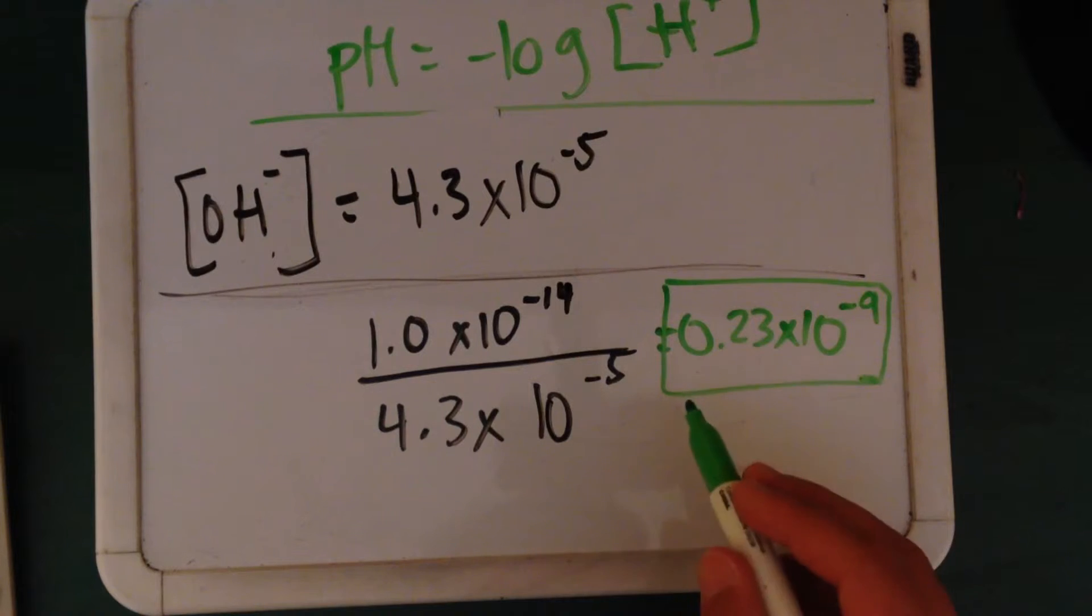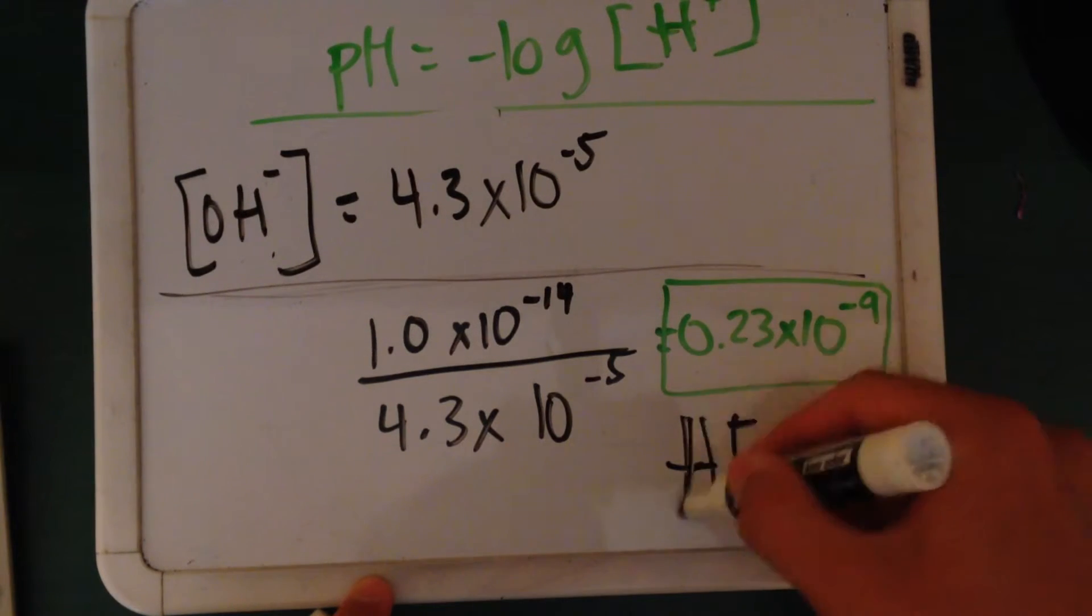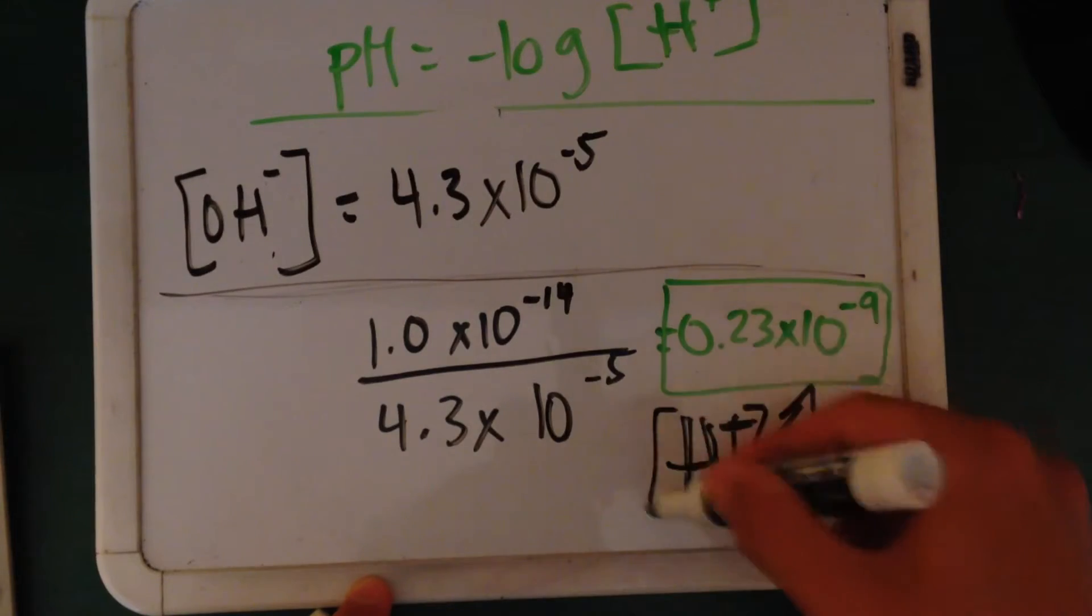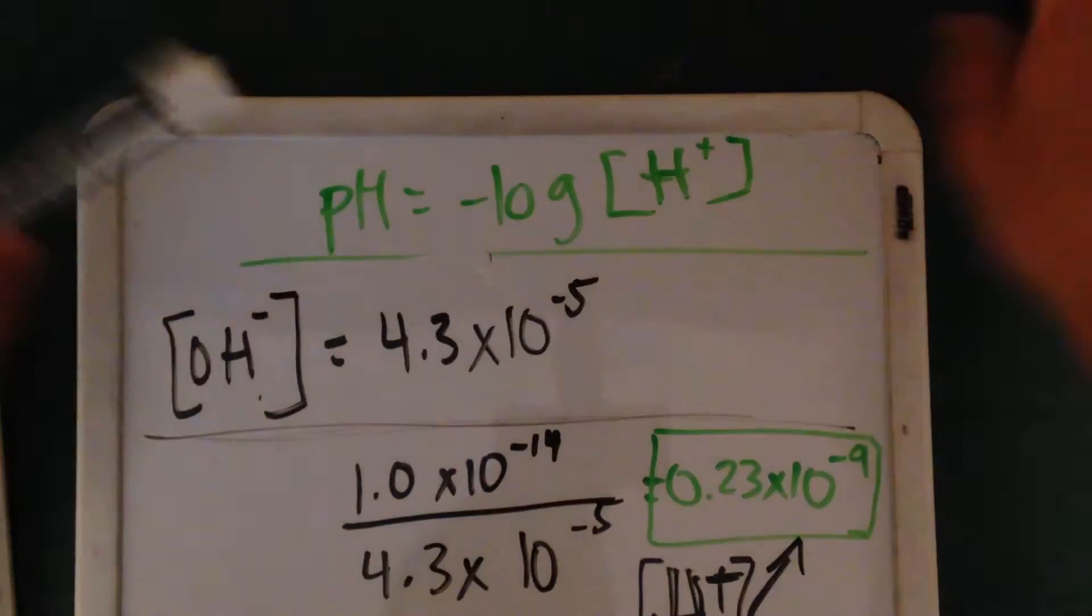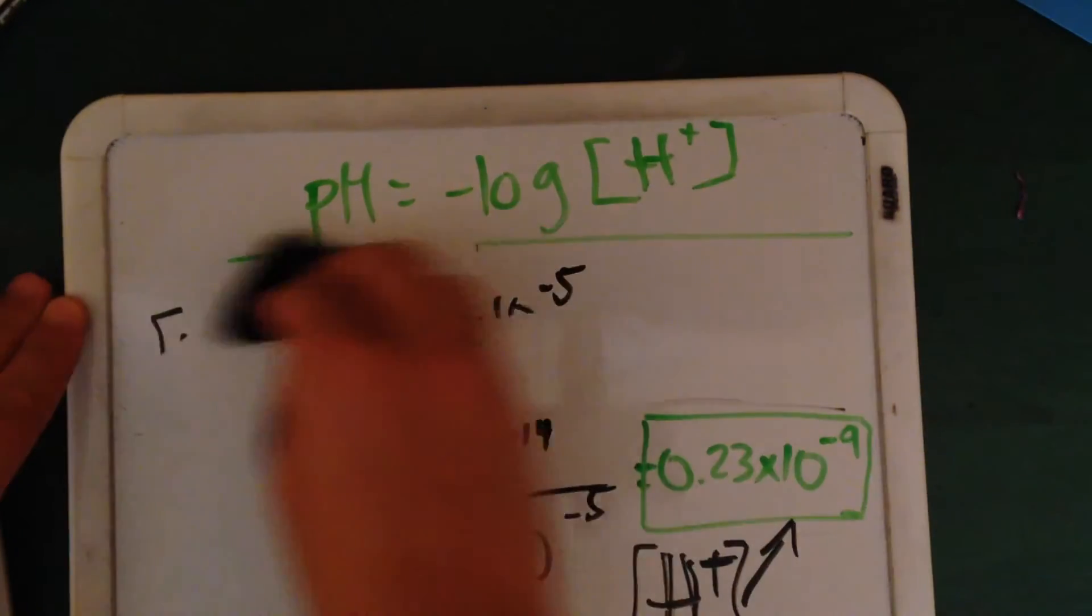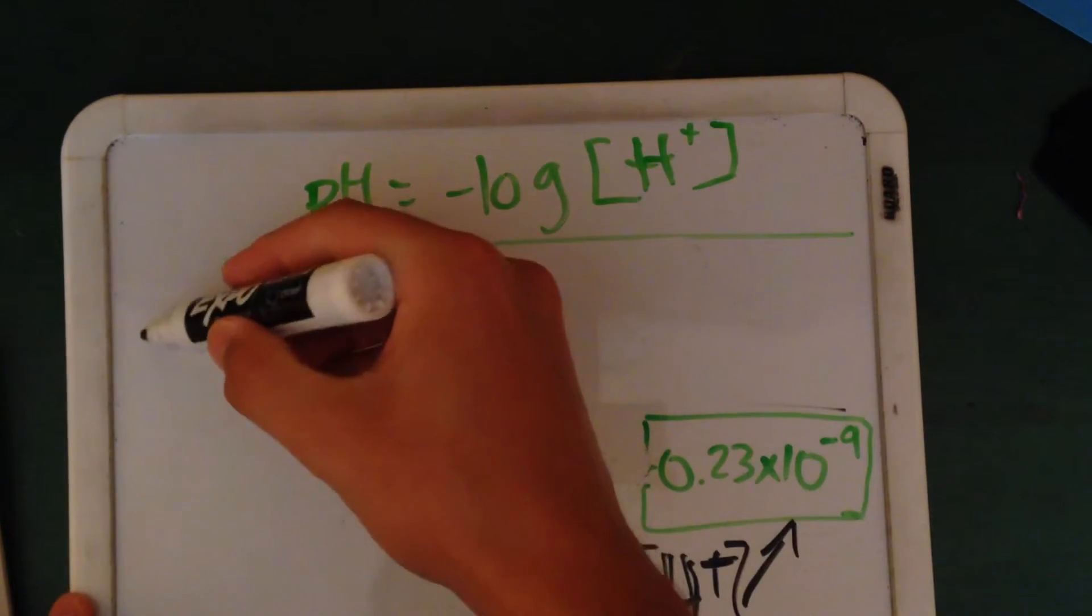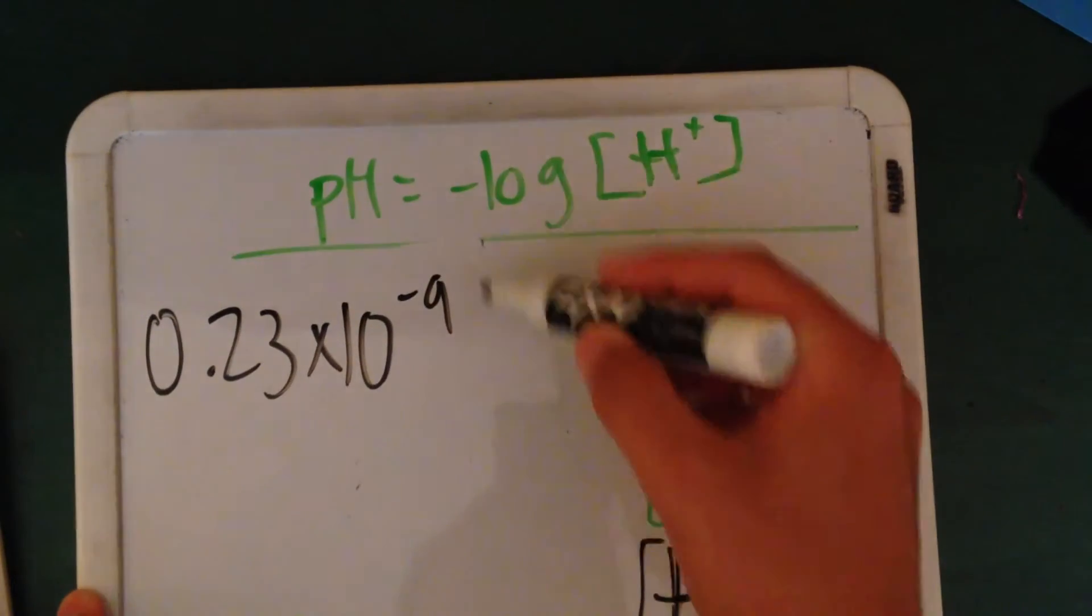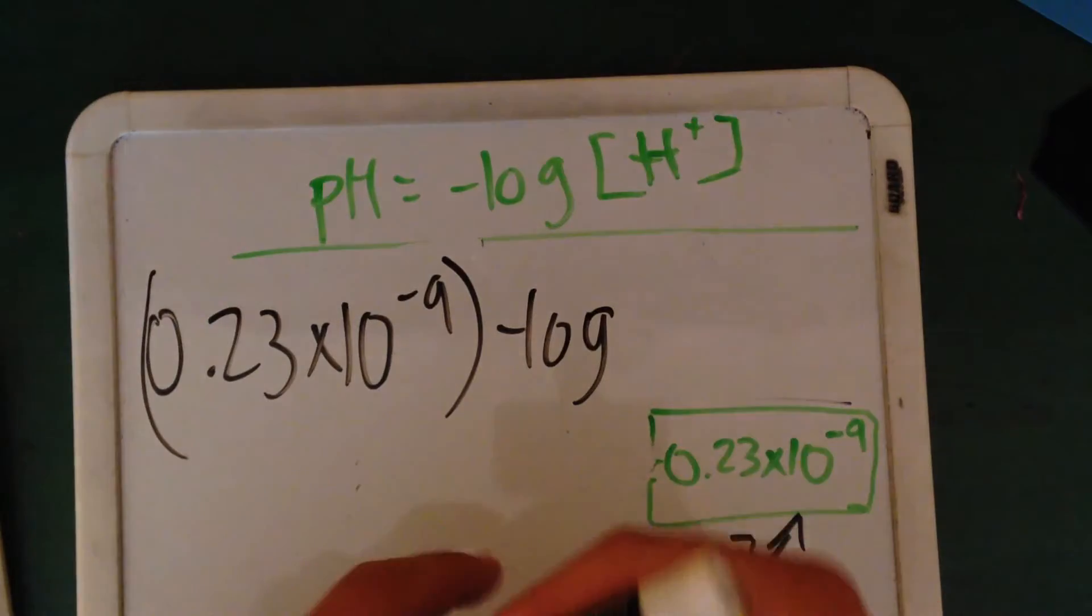And now this is our H plus. And now we can plug it into this equation up here. So 0.23 times 10 to the negative 9. We're going to find the negative log of this. And that's going to be your pH.